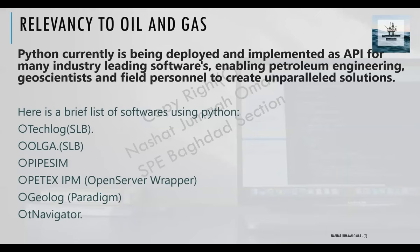Now let's see which commercial softwares in oil and gas have started shifting towards Python. The first and foremost software that relies 100% on Python is TechLog, offered by Schlumberger. You also have Olga — a dynamic production simulator that's now integrating its workflows with Python, so you can use Python to drive calculations or control the software from code.